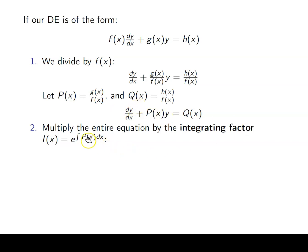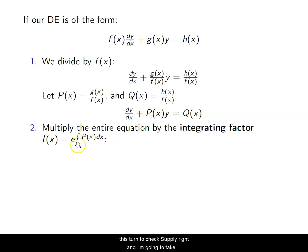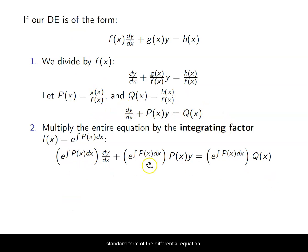We take this integrating factor and multiply the entire equation. We multiply E to the power of the integral of P(X) dx times my Y prime, then times the P(X)·Y term, and also on the right-hand side times Q(X). So the integrating factor is multiplied times each term in the standard form of the differential equation.